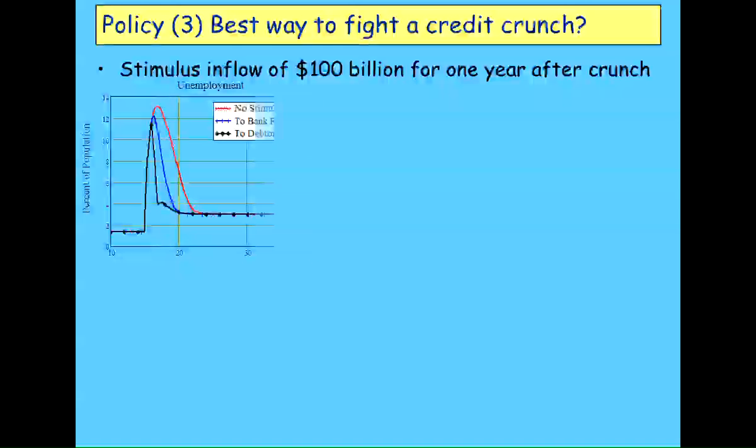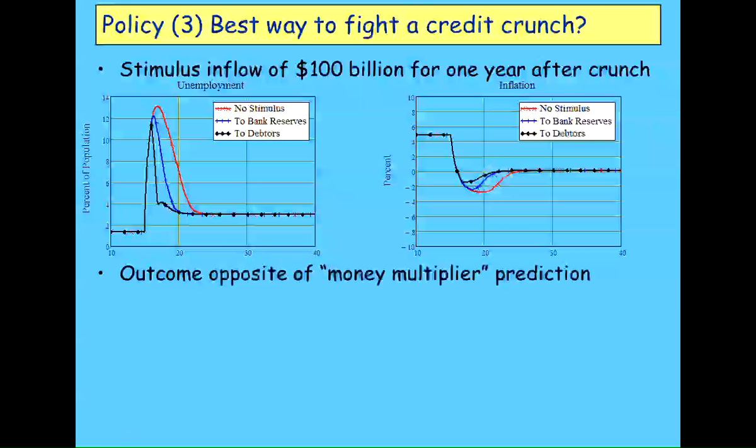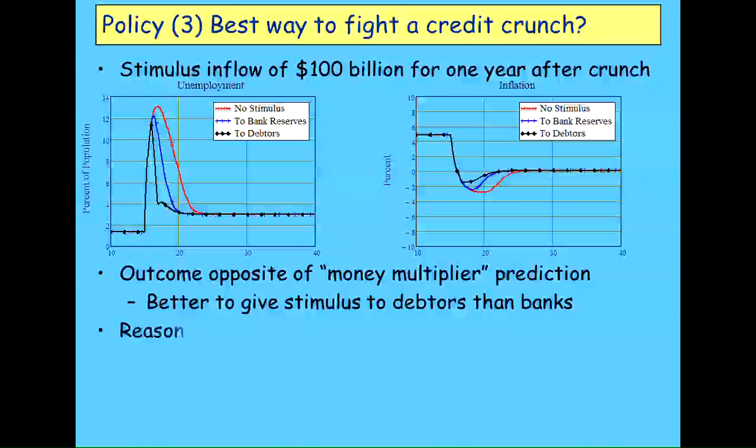Let's take a look at that. As you can see, the red line is what happens to unemployment in the absence of the stimulus. The blue line is what happens when you give the money to the banks, and the black line is what happens when you give it to the firms or the workers. So Obama's wrong, or rather his advisers are wrong. He would have got more bang for his buck by giving the money to the firms rather than the banks. And ditto on inflation. This model goes to sustained deflation for quite some time without a stimulus, less deflation with the banks getting it, substantially less with the money going to the debtors. It's the opposite of the money multiplier prediction.